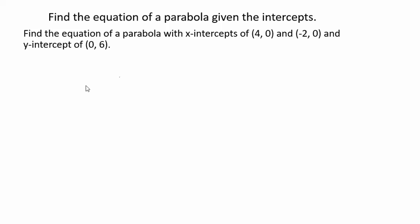Alright, so first off, the idea here is to work backwards. Usually, you're given the equation and asked to find the x-intercepts. So this process, we're going to work backwards. We know one of the x-intercepts is (4, 0), and another x-intercept is (-2, 0).